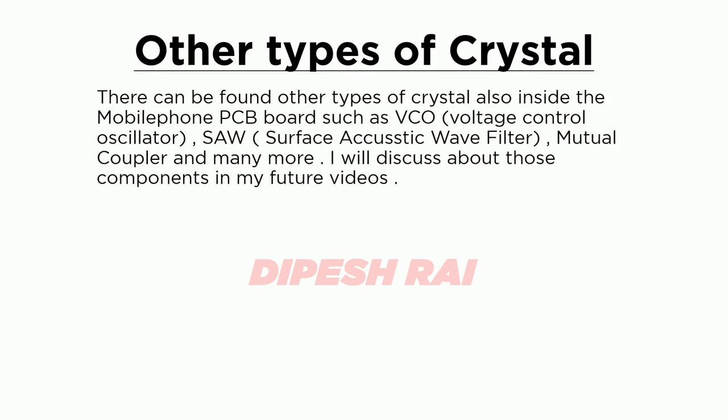There are other types of crystals also found inside mobile phone PC boards, such as the VCO (voltage-controlled oscillator), SAW (surface acoustic wave) filter, mutual coupler, and many more. I will discuss those components in future videos. Today we especially discussed the RF crystal and the RTC crystal, which are important small components with different roles inside the mobile phone PCB board.